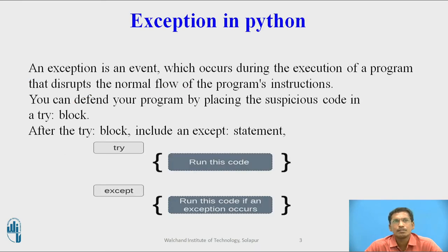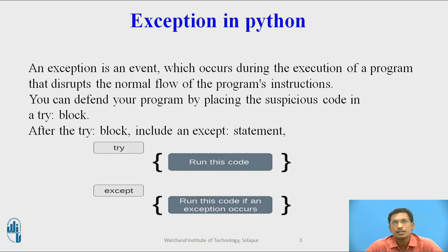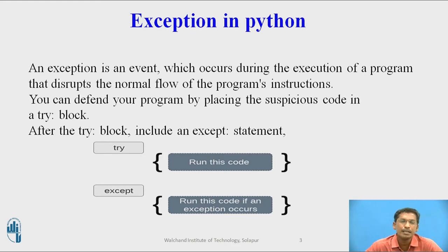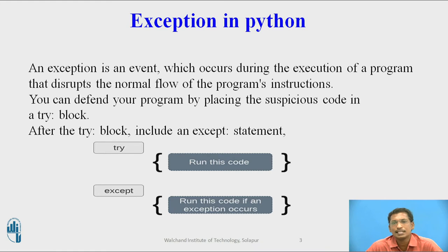What is an exception? Generally, there are two types of errors: one we call normal errors and the second one is exceptions. Errors generally occur during compile time, and exceptions occur during execution time. So an exception is an event which occurs during the execution of your program that disrupts the normal flow of program instructions.